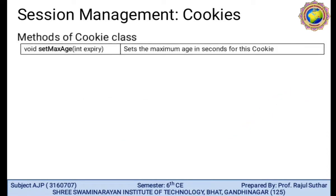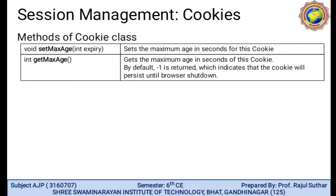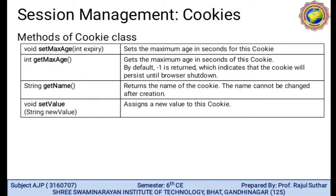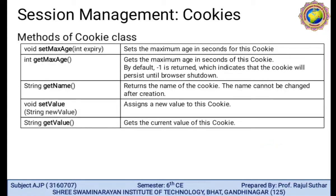Methods of the Cookie class: void setMaxAge(int expiry) — sets the maximum age or lifetime of the cookie in seconds. Integer getMaxAge() — gets the maximum age of the cookie in seconds; by default, minus one is returned, which indicates that the cookie will persist until browser shutdown. String getName() — this method returns the name of the cookie, and the name cannot be changed after creation. void setValue(String newValue) — assigns a new value to the cookie. String getValue() — returns the current value of the cookie.